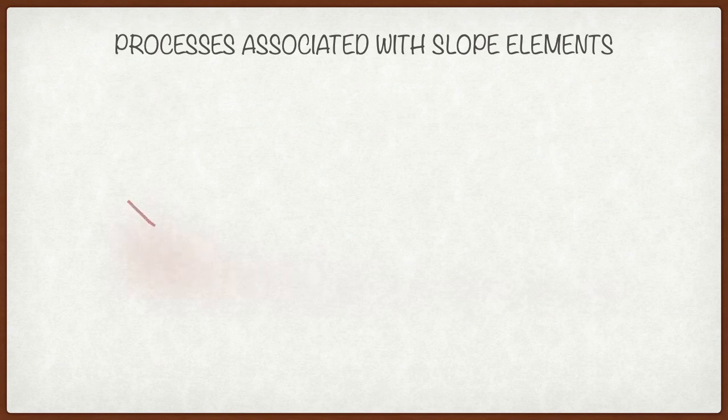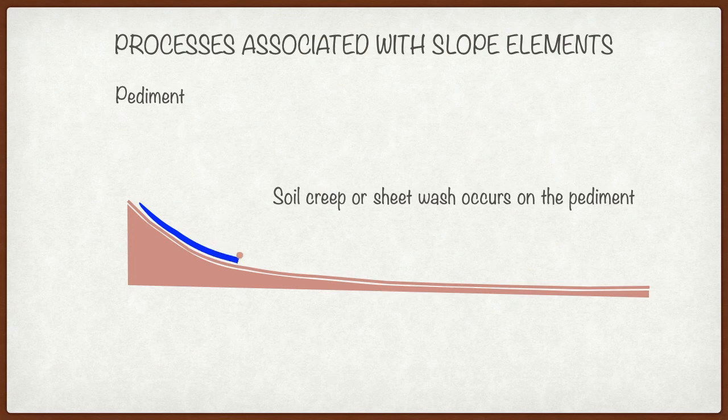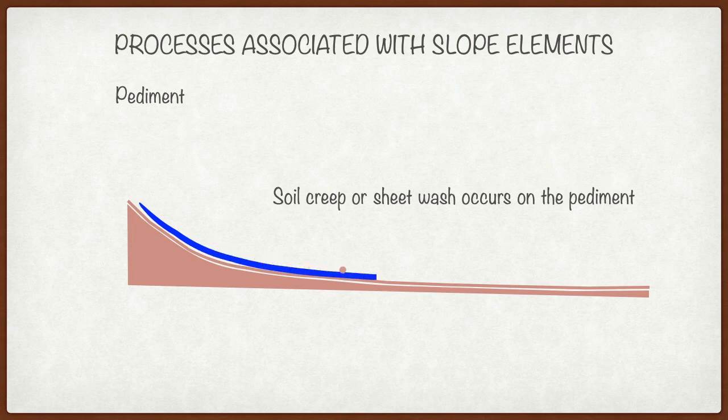This brings us to the final slope element, and that's the pediment. On the pediment, you've got fine materials. So if you get rainfall or water flowing there, you're going to get sheet wash or soil erosion. As you see in the animation now, any water would move the particles along the slope. So even though the slope has got a very low angle,